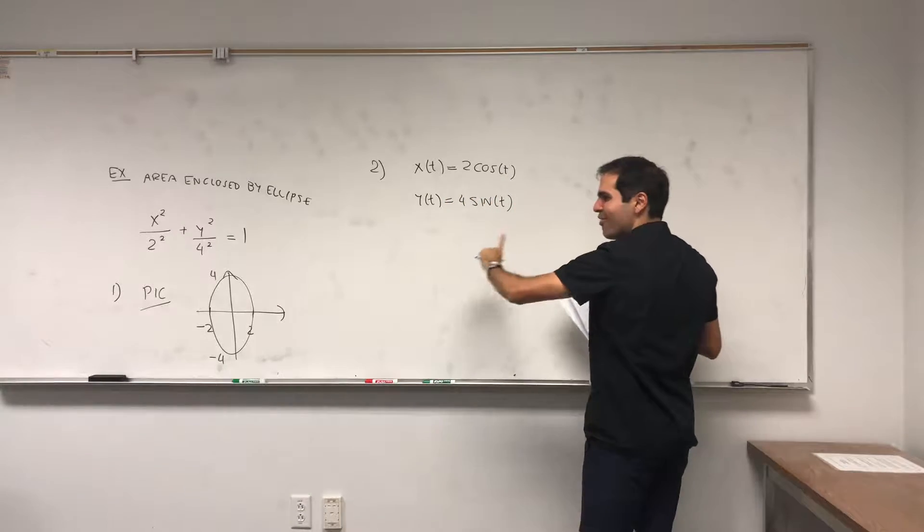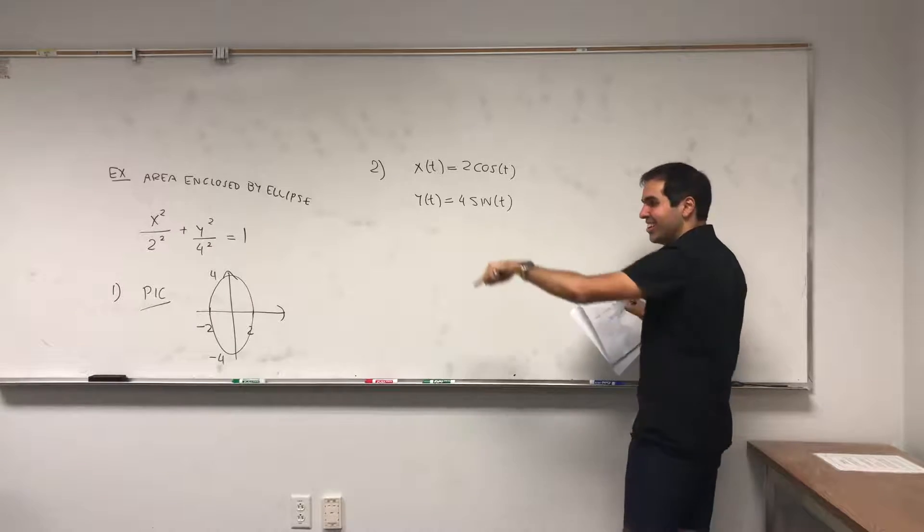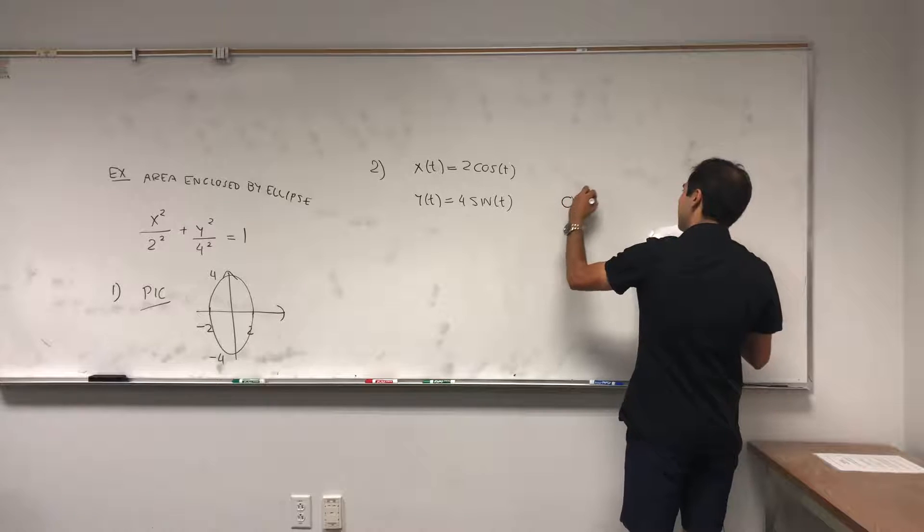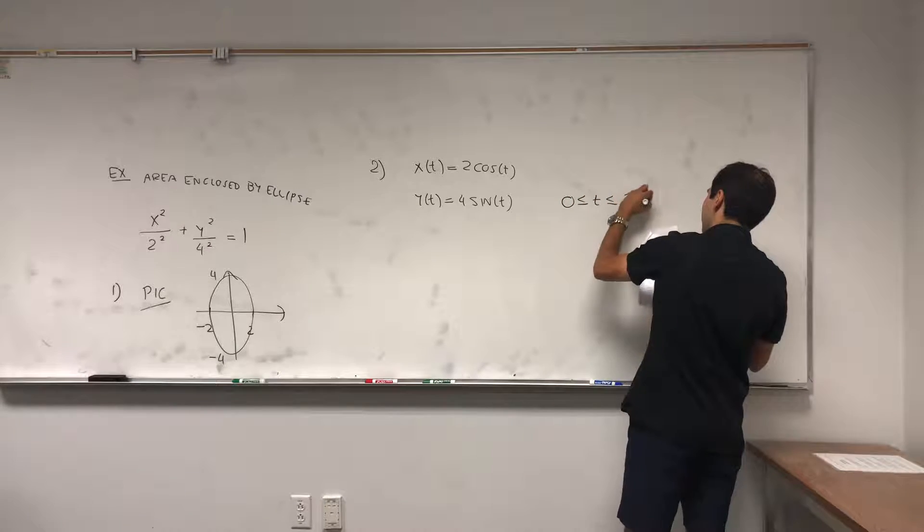And that's because we want x between minus two and two, and y to be between minus four and four. So t is from zero to two pi.